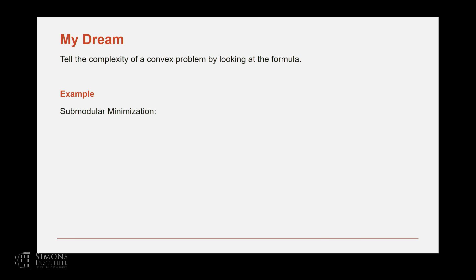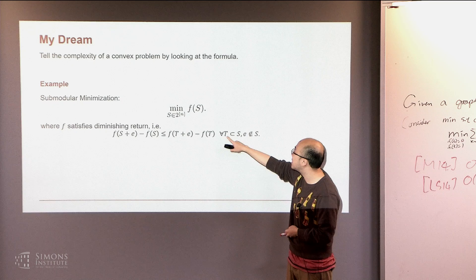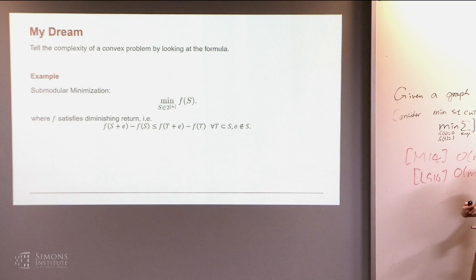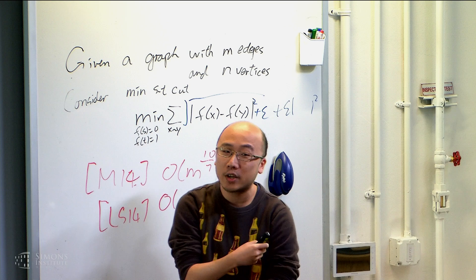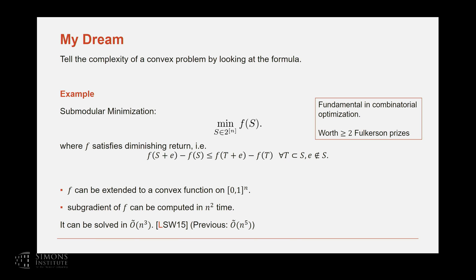Submodular minimization is fundamental in combinatorial optimization. It turns out two key observations: first, this problem is a convex optimization that extends to a hypercube; second, the subgradient of F can be computed in N-squared time using a greedy method. Using just these two facts, we get an N-cubed algorithm, faster than the previous specialized algorithm which ran in N to the 5.